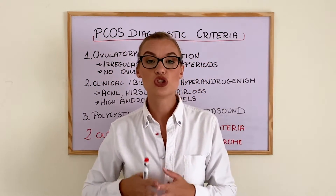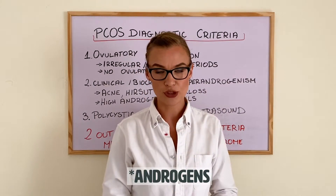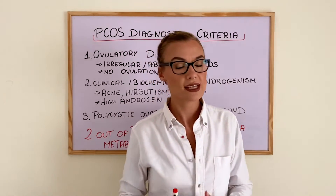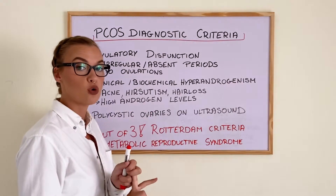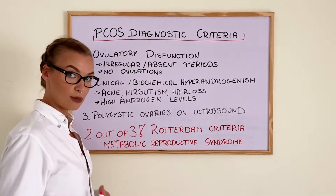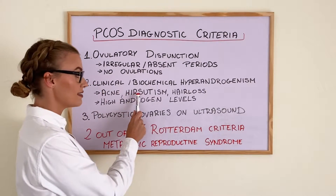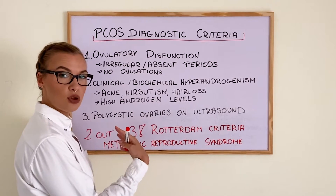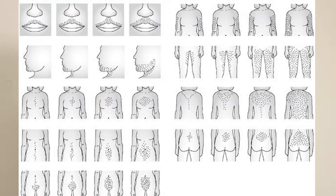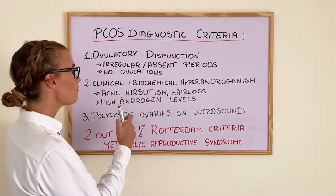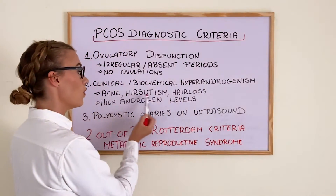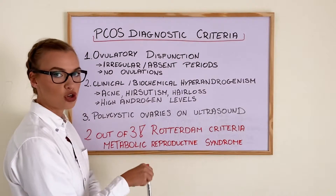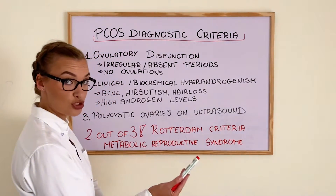Your doctor can look at the signs of high androgens in your body. We have two types of androgens: testosterone and adrenal androgens. For testosterone, the most common signs are acne, hirsutism — which is excessive hair growth in places associated with male patterns, such as the chin, chest, back, or bottom — and hair loss. If you have one or a few of these signs, it can indicate to your doctor that you have high testosterone or high androgen levels.